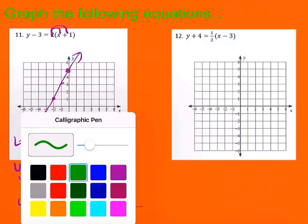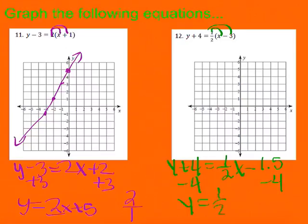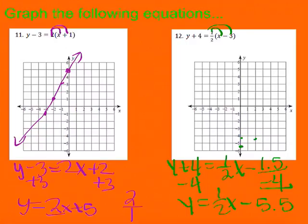Now let's take a look at number 12. I want to start by distributing in that 1 half. I get Y plus 4 equals 1 half X, and then instead of negative 3 halves I'll convert to a decimal: negative 3 divided by 2 is negative 1.5. Subtracting 4 from both sides gives Y equals 1 half X minus 5.5. When I graph negative 5.5, I'm halfway to 6. Then I go up 1 over 2, up 1 over 2, because my slope is 1 half, and connect the lines. That's your answer for number 12.